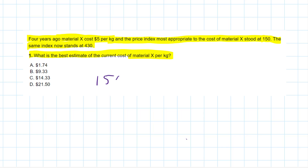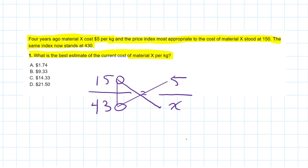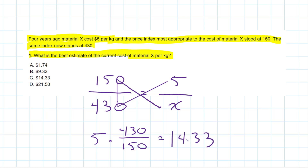The ratio of 150 to 430 will be the same as the price at 150 to the price at 430. My unknown is in the denominator on the right side. A simple way to solve for X: multiply the numerator on the right by 430, then divide by 150. That gives 5 multiplied by 430 over 150, which comes to $14.33. The answer is C — and that's how we deal with X when it's part of a ratio.